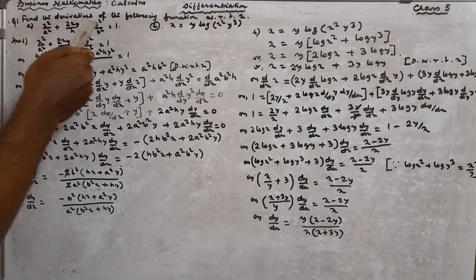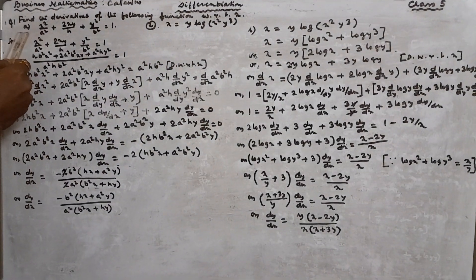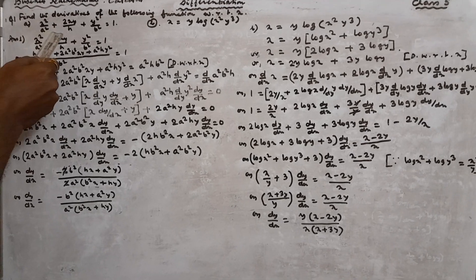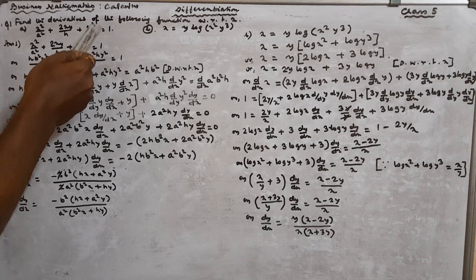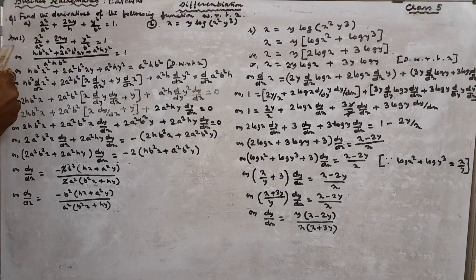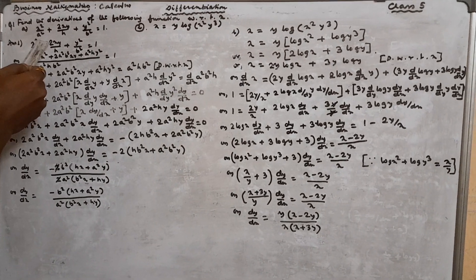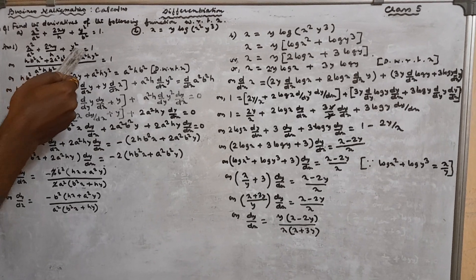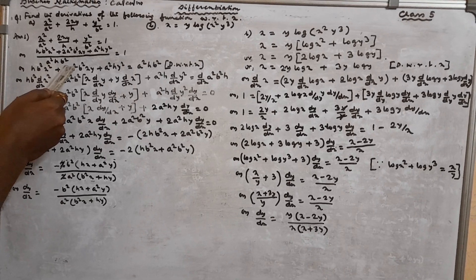Question given: find the derivative of the following function with respect to X. First question: X²/A² + 2XY/H + Y²/B² = 1. So the equation is X²/A² + 2XY/H + Y²/B² = 1. First we have to find the LCM, which will be A²B²H.